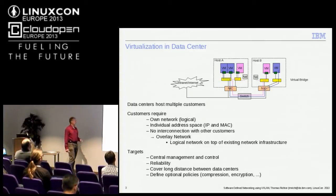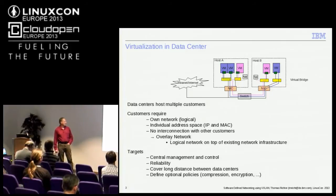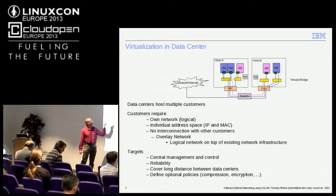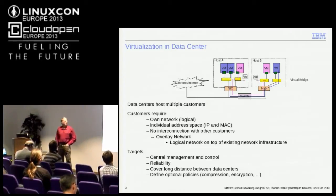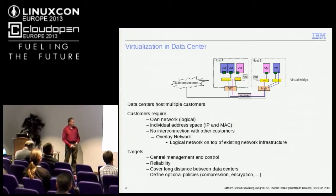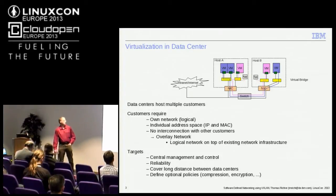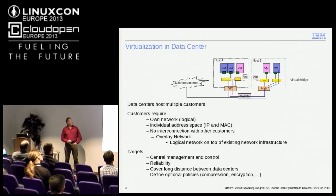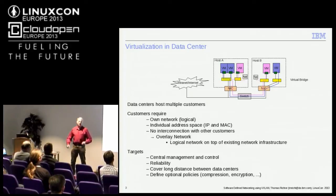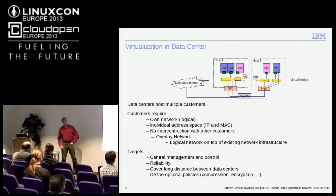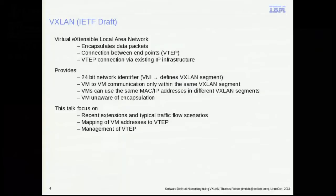What this really refers to is an overlay network — a logical view of my network on top of an existing underlying network, using the existing underlying infrastructure. What we want is central management and control, so the customer can control his logical network. It should be reliable, and ideally it should cover long distances — it shouldn't matter if the two machines are next to each other or across the globe. Optionally, we want the ability to define policy: a specific machine shouldn't be able to talk to another, or we might insert an appliance that does encryption before traffic goes over an unknown service provider network. Those are the customer needs, and I'll show how we can realize them using VXLAN.